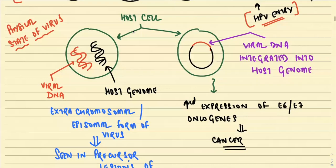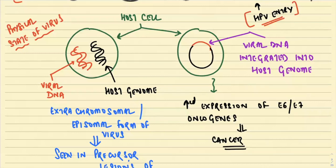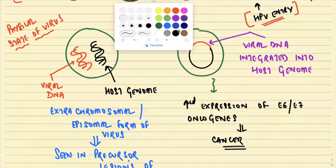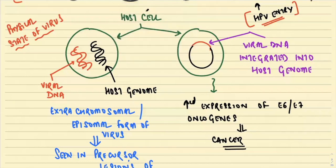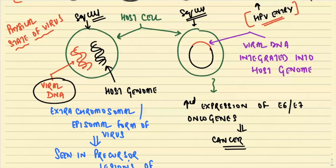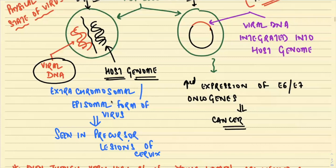There is also the concept of the physical state of the virus. In precursor lesions, the viral DNA is not integrated with the host genome — this is called the extrachromosomal or episomal form of the virus. The episomal form is classically seen in pre-cursor lesions of the cervix — H-CIL and L-CIL.